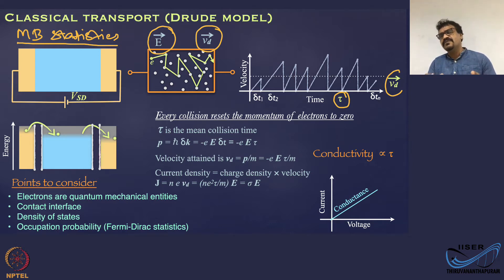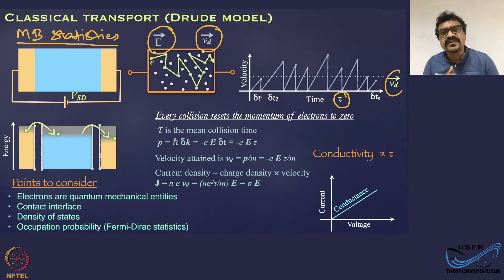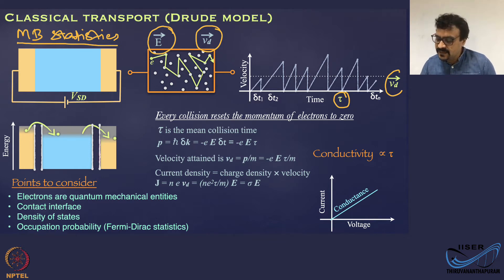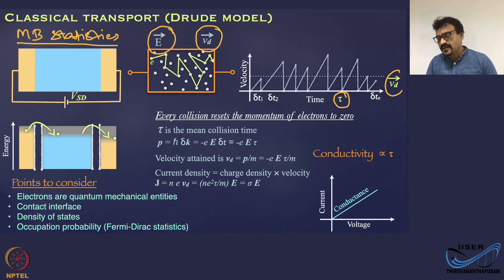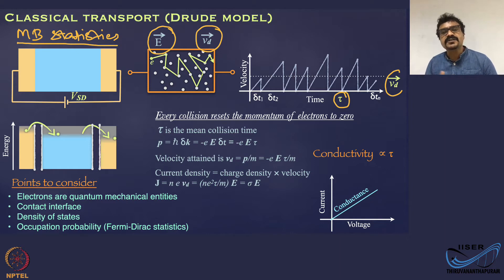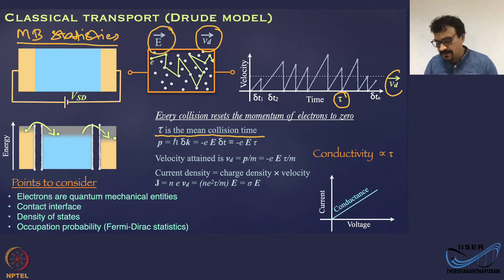You will have a distribution of times between two collisions — delta T1, delta T2, and so on up to delta Tn. The mean or average of these times is what we call the collision time or scattering time, that is the mean time between two collisions. Correspondingly, there is an average velocity for electrons through the system that we define as drift velocity Vd. Tau here is the mean collision time.